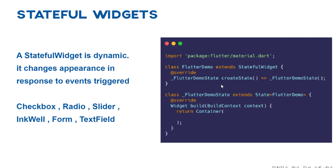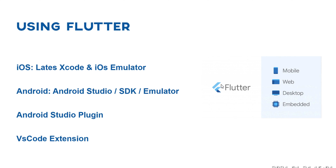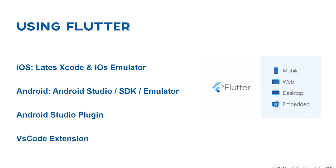A stateful widget is dynamic and changes immediately when you save, or when you use it on Android or iOS. Examples include checkbox, radio, slider, form, and text field. To use Flutter on your machine, make sure you have the latest VS Code or iOS emulator. For Windows, make sure you have Android Studio SDK, the emulator, and the Flutter VS Code extension installed.